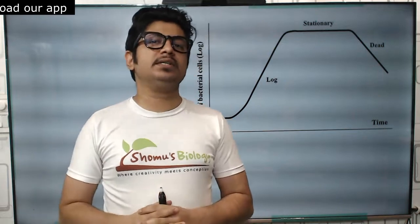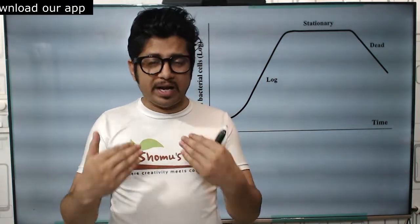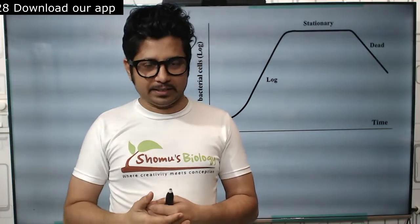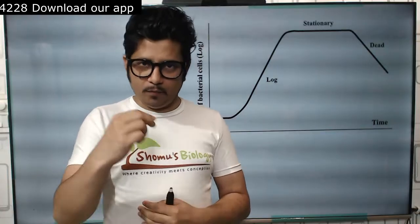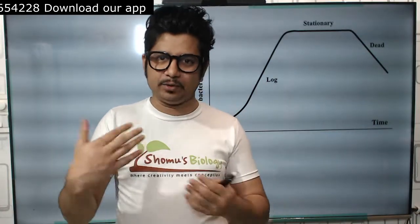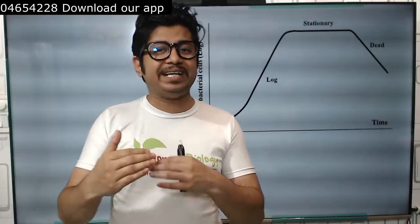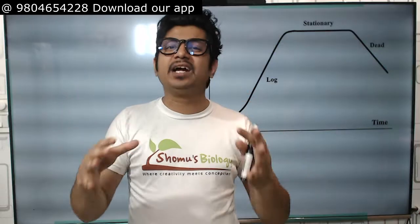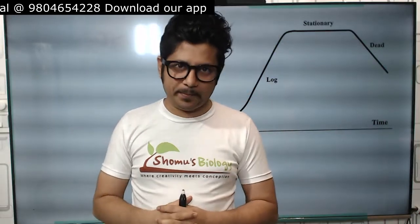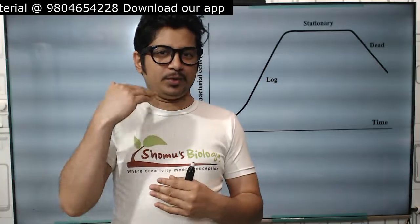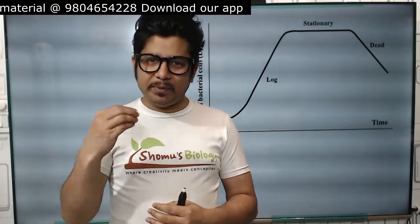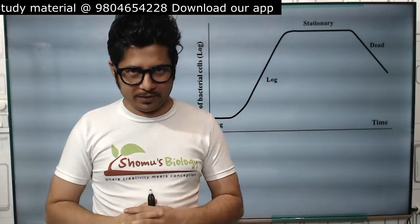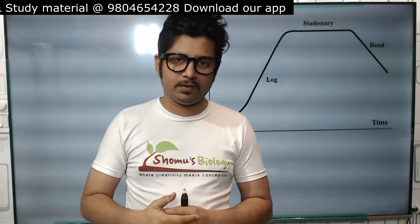When we talk about bacterial growth curve, we are trying to understand the growth of bacterial cells. Bacteria is a single-cell organism and it grows by dividing itself from 1 to 2, 2 to 4, 4 to 8, 8 to 16, and so on. This exponential growth and division is measured in an artificial environment in the laboratory setup. When we allow the bacteria to grow and divide, we measure the growth and plot it against time to get the bacterial growth curve.